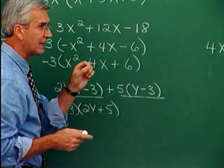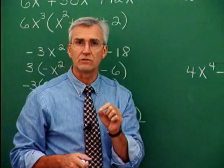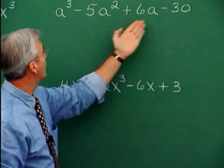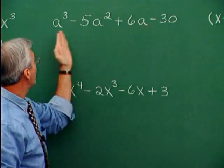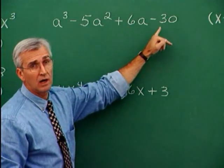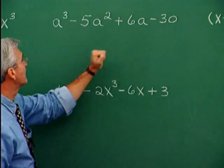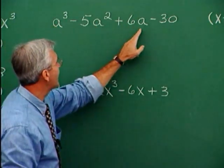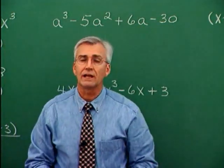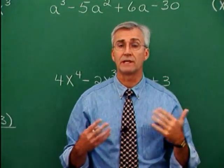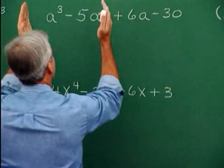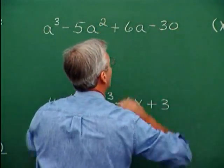Binomials can play the same role as single letters in some circumstances. Here we have four terms to be factored. We would look for a common monomial factor first, and we don't see one — there's a 1 here, so no numbers are common as factors in all of these, and there's no variable common to all four terms. The technique for factoring when faced with four terms is called factoring by grouping, accomplished by thinking of these two as a group and those two as a group.